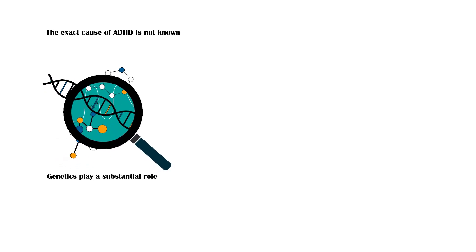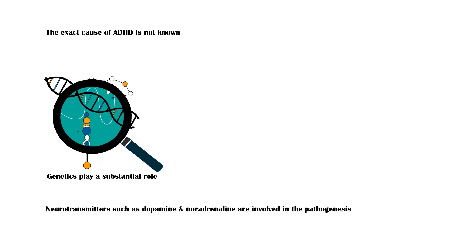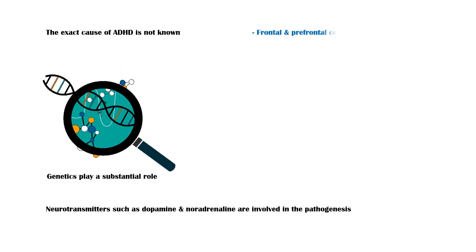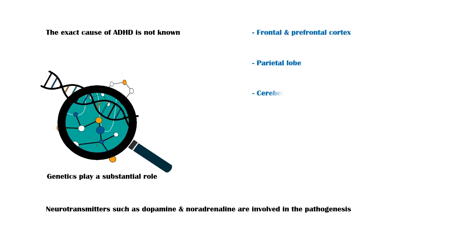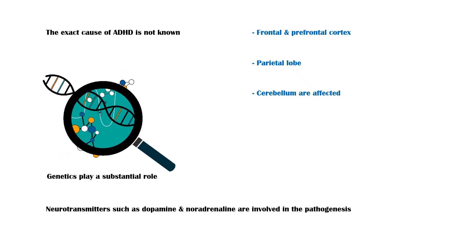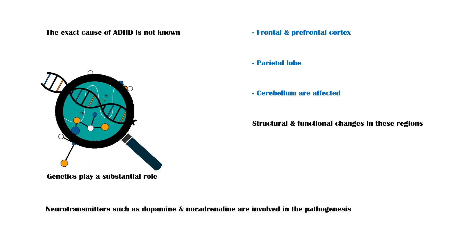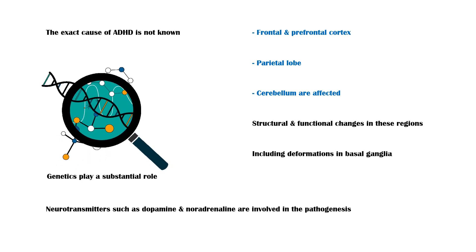The exact cause of ADHD is unclear. However, genetics plays a substantial role. Studies indicate that neurotransmitters such as dopamine and noradrenaline are involved in the pathogenesis. The frontal and prefrontal cortex, parietal lobe, and cerebellum are the regions of the brain that are mainly affected. Studies show structural and functional changes in these regions, including deformations in the basal ganglia.